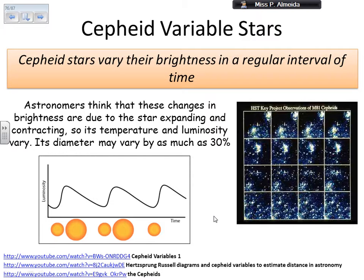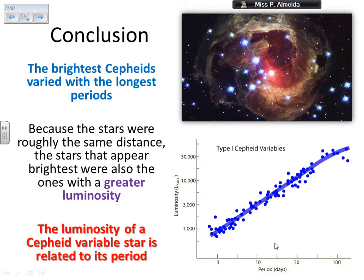The good thing about Cepheid variables — and by the way, in this picture I have here the example of Cepheid variables, so you can see them brighter and then dimmer and then brighter again — is that they are easy to detect. We can simply look at them and look at how long it takes for their brightness to return to what we initially saw, to get to know the period of their brightness variation. And funnily enough, there is a relationship between the period they take to vary their brightness and the star's intrinsic luminosity. As you can see from this graph, they make a linear relationship where the longer the period in days, the brighter the stars are in terms of luminosity.